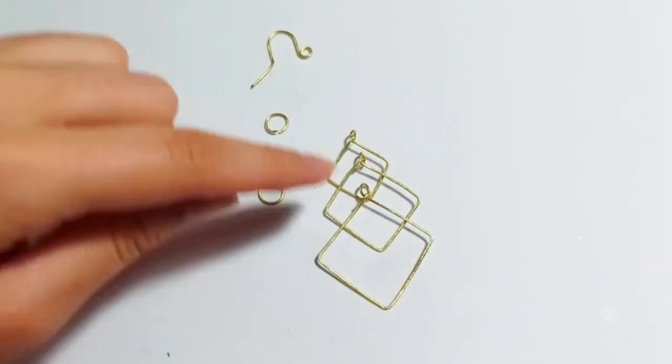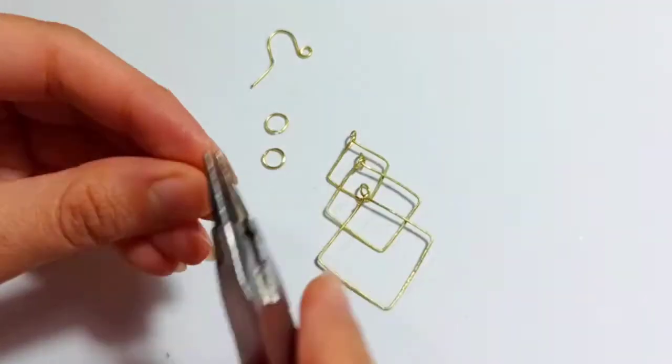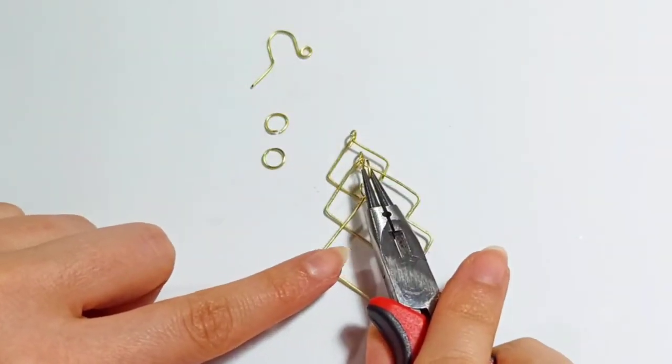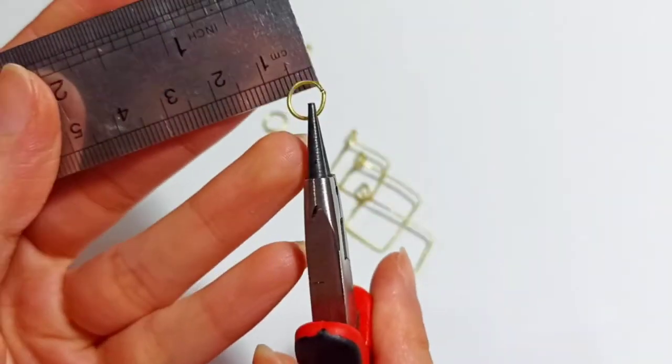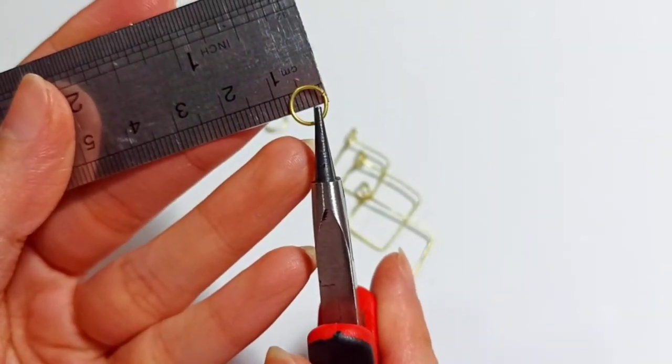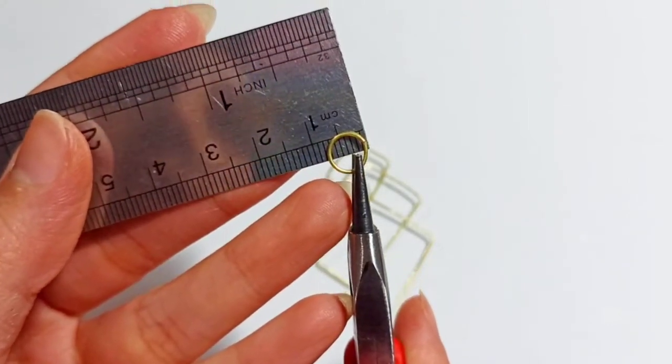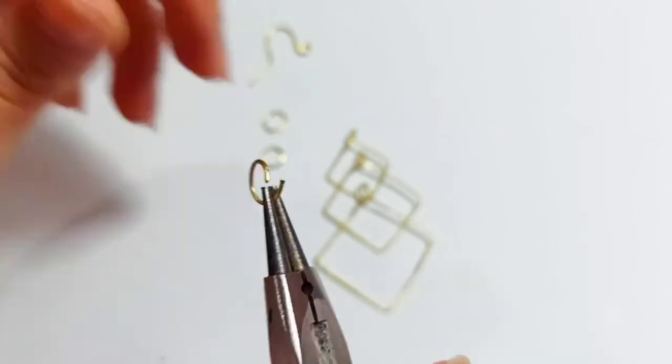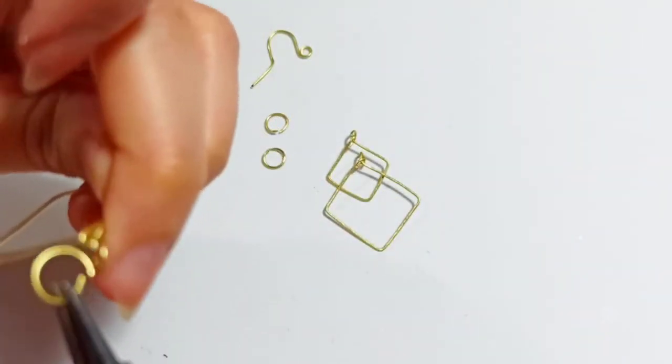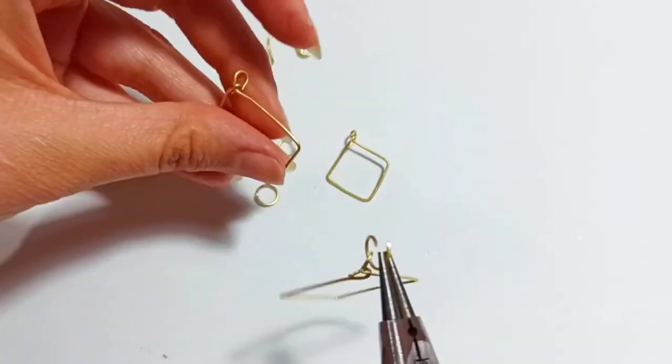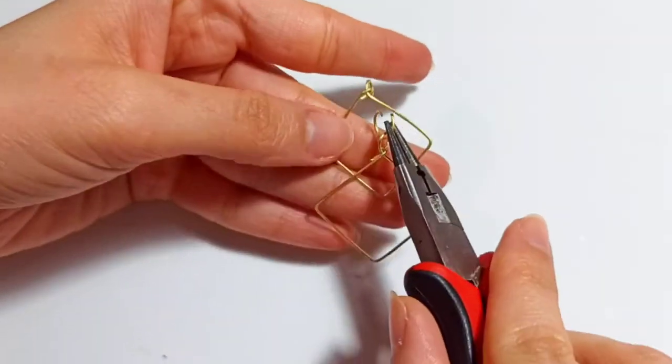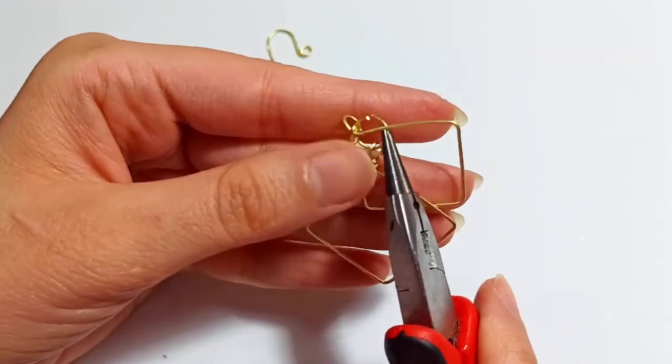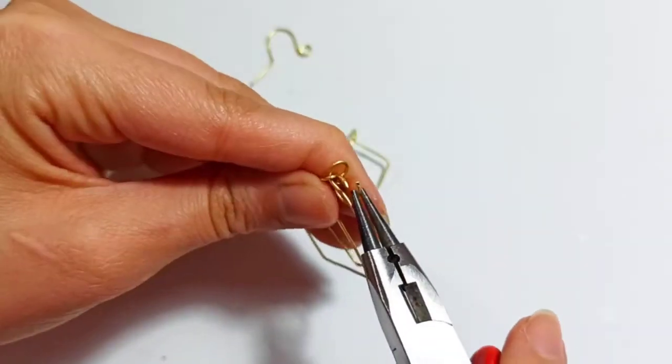This is the time to attach these three parts and the earring hook. We need jump rings that are a little big—mine are about 7 millimeters in diameter. We open one, insert our biggest square, then put it on the second square, insert the jump ring, and close it.